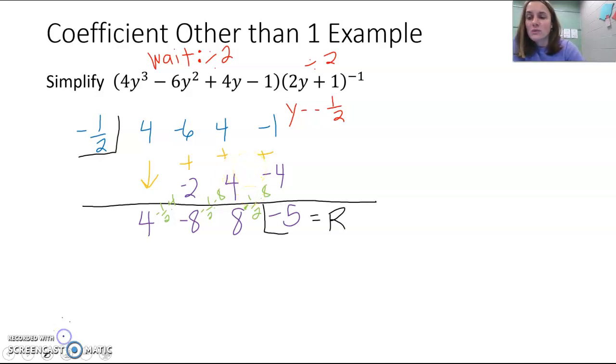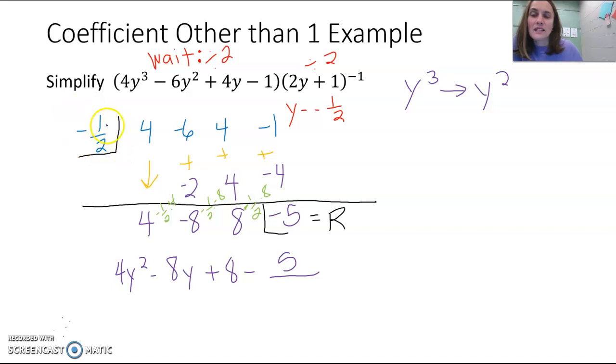But now we're going to go back and we're going to do that divide by 2. But what I want to show you first is, based on what our answer looks like, we went from a y cubed to a y squared. By doing this division, we're going to go from a y cubed to a y squared. So we have 4y squared minus 8y plus 8 minus 5 divided by, now remember, you divided by this negative 1 half. You divided by, in this form, y minus negative 1 half, or y plus 1 half.